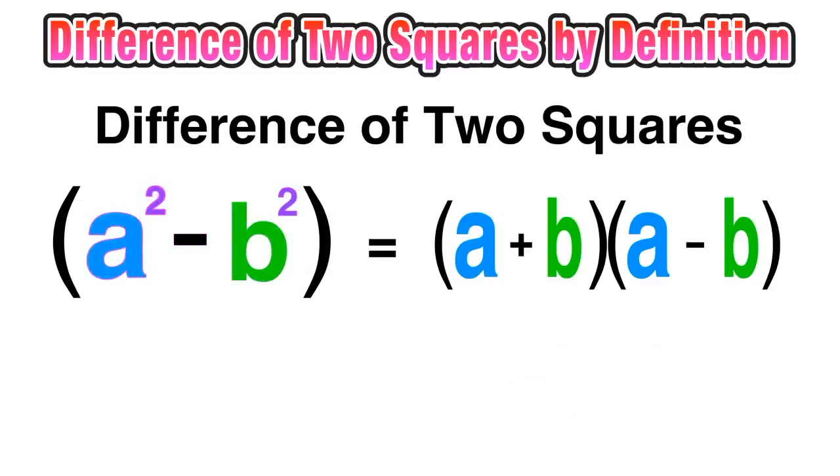So all that we're actually doing here is taking the first term and taking the square root of it, so a squared becomes a since the square root of a squared is a, and then the second term b squared, again taking the square root of it, square root of b squared is just b, and then we have alternating signs in between. One factor has a plus sign in the middle, the other factor has a minus sign.